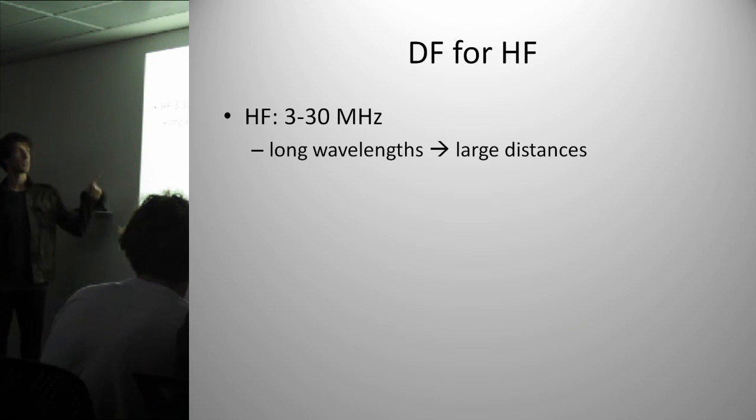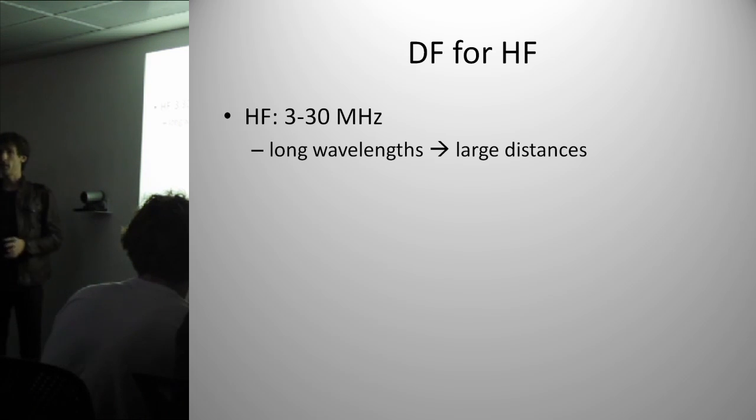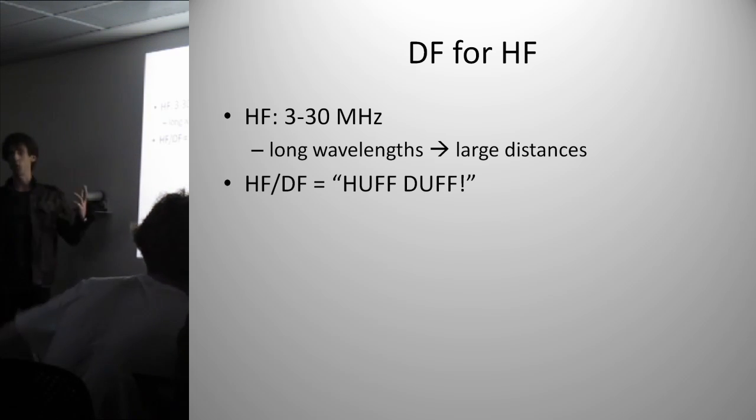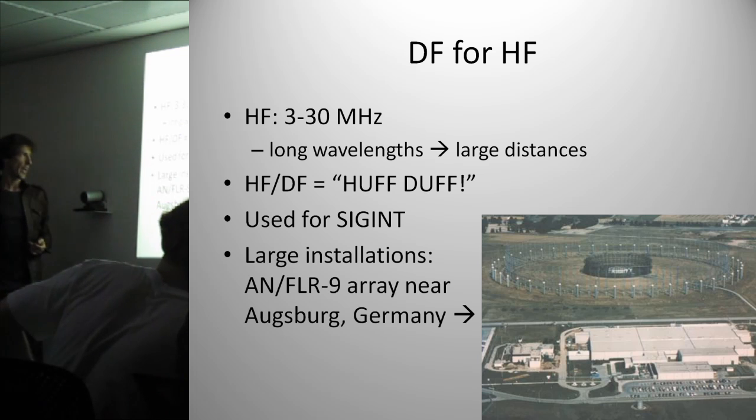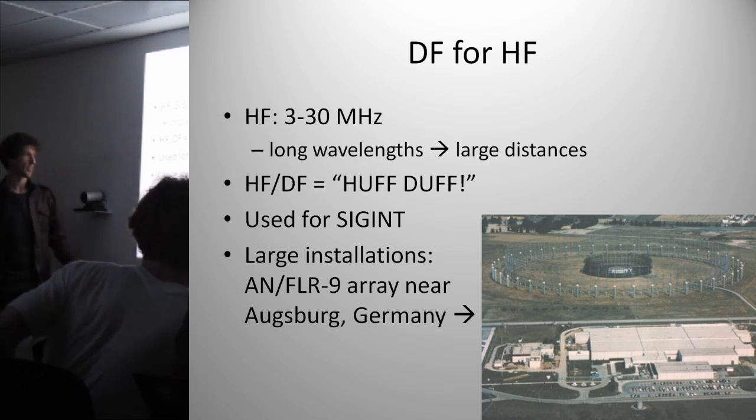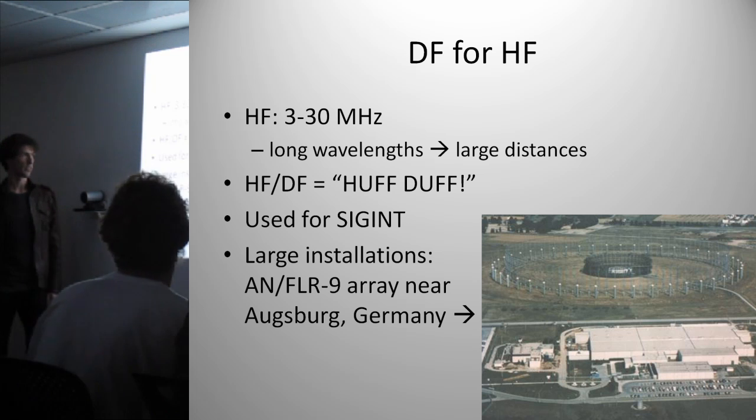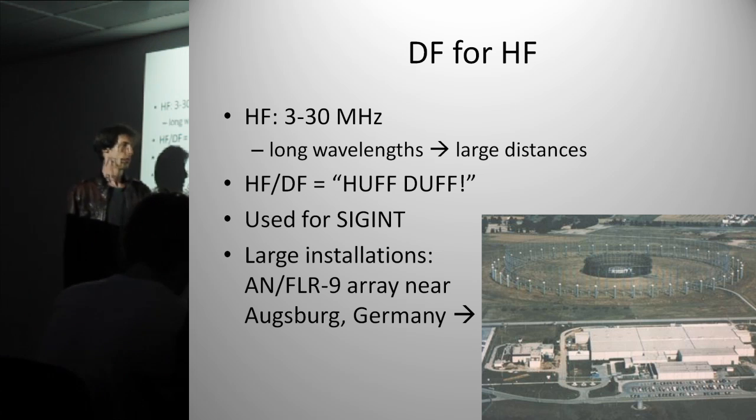There's another thing, which is direction-finding for HF. HF is the portion of the radio spectrum of 3 to 30 megahertz, so the wavelengths are very long. That means you can cover vast distances. This is known as HFDF. This is also used for signals intelligence, and certain people love to build absolutely enormous ones. This is an example of one in Germany, and because the wavelengths are so long, they need enormous elements to pick up the signals.